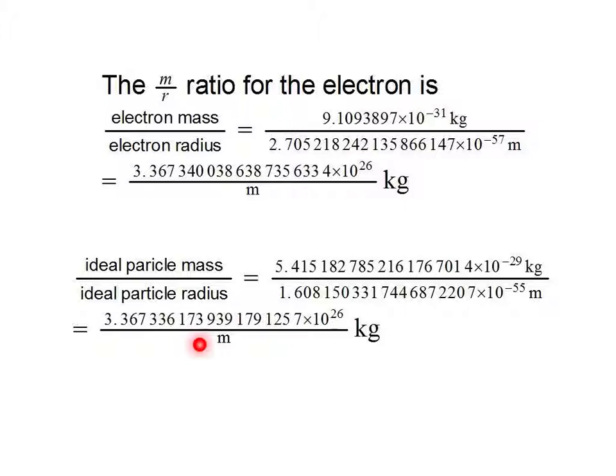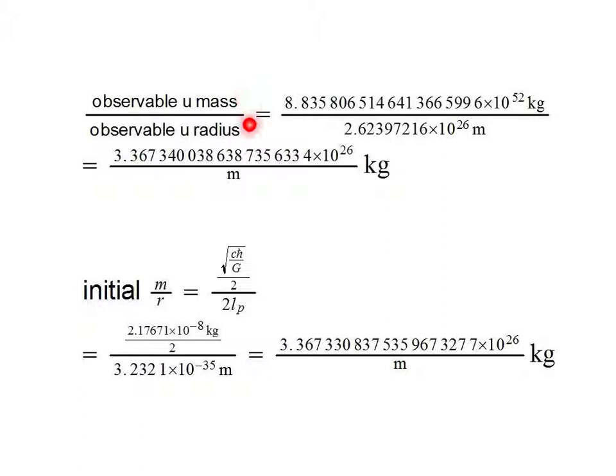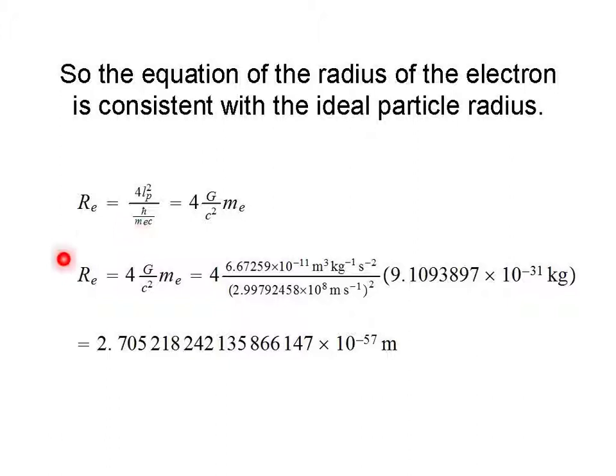And looking at the ratio of the mass to the radius of the observable universe, we get 3.367 times 10 to the 26 kilograms per meter, which matches the initial condition. So the equation for the radius of the electron is consistent with the ideal particle radius.